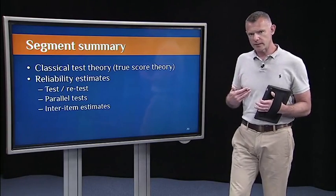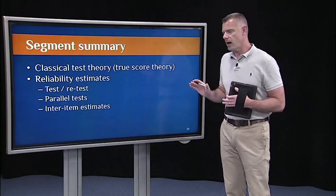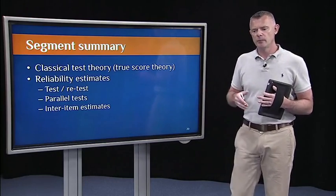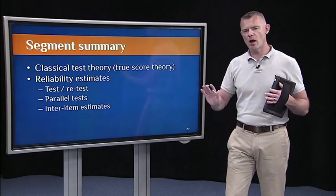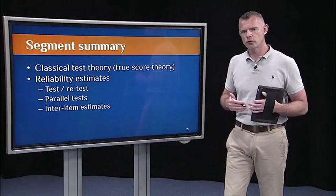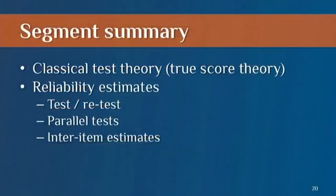So to summarize this first segment on measurement issues, the main topic here is reliability. I introduced reliability by giving a quick overview of this very broad theory in psychometrics called classical test theory or true score theory. And then we talked about three ways to get reliability estimates: test-retest, parallel tests, and inter-item estimates.